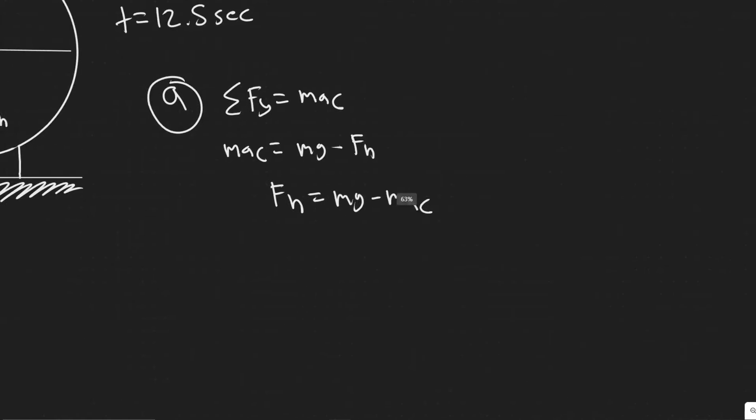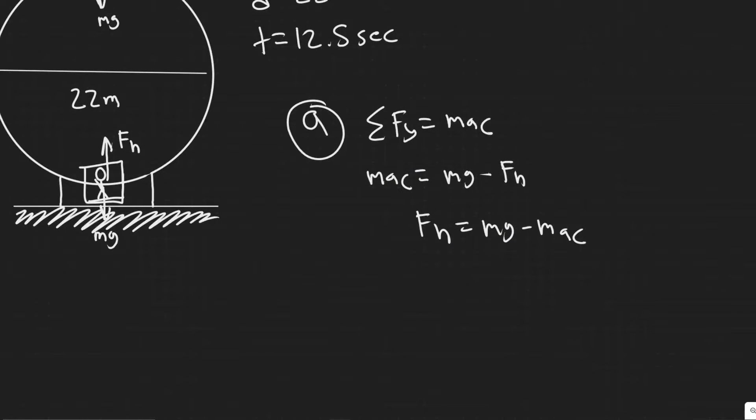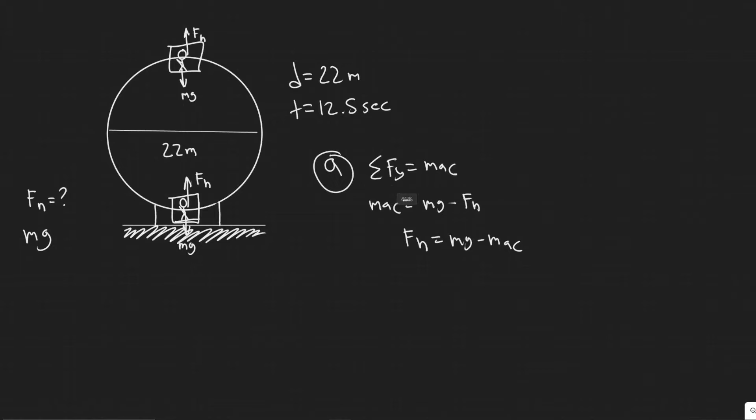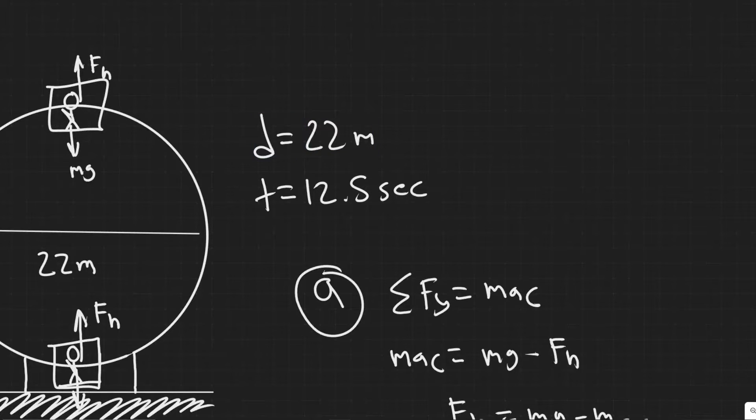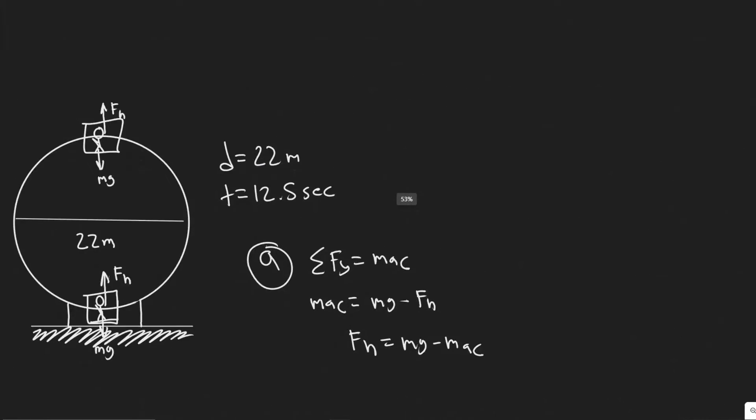But yeah, so notice for this, we need to find the centripetal acceleration that it's going to be experiencing. And we do that by using this information here. So using our diameter and time, we know that A sub C equals V squared over R, where R is the radius, V is the velocity.